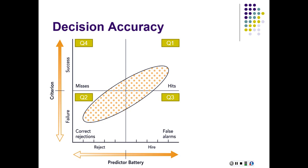On the criterion, we've determined what constitutes success on the job. If you're below a certain cutoff, we call that failure on the job. If you're above that cutoff, we call that success. By dividing the x- and y-axis into these reject, hire, failure, success categories, we end up with four quadrants.